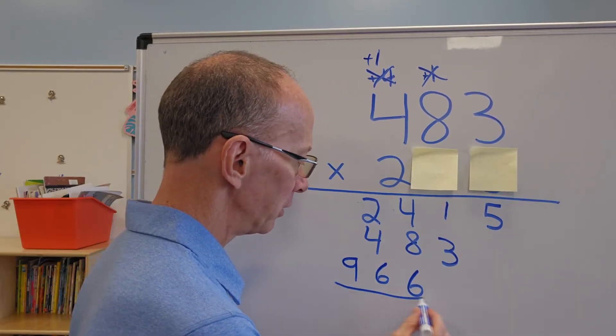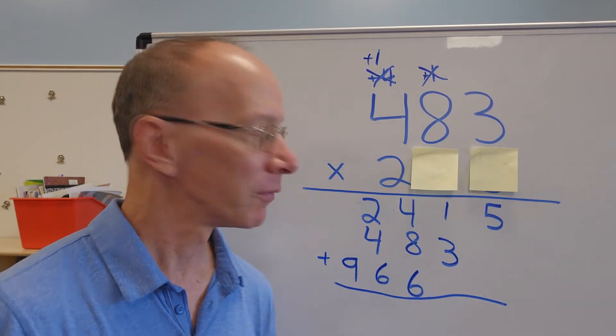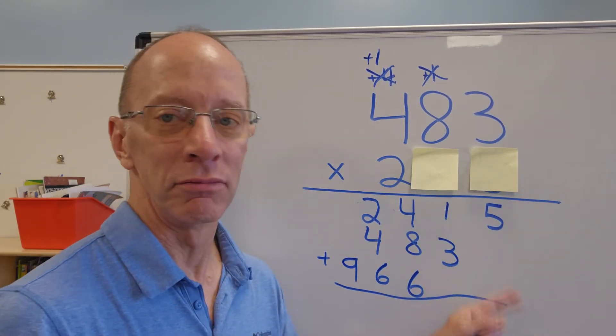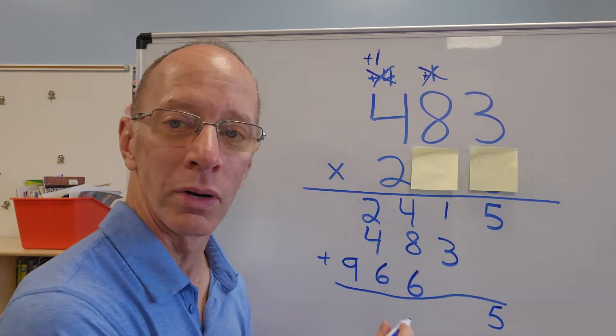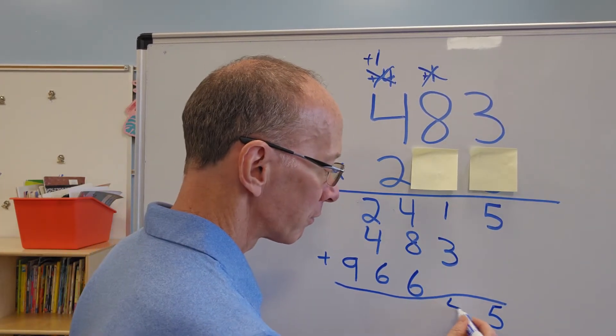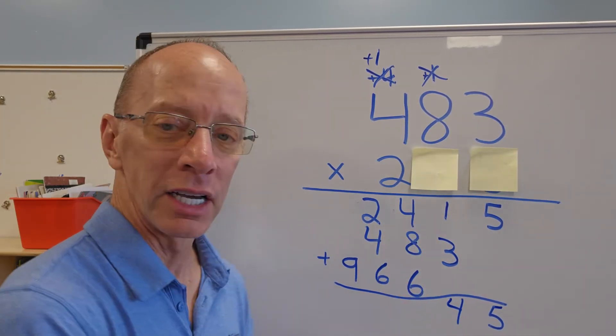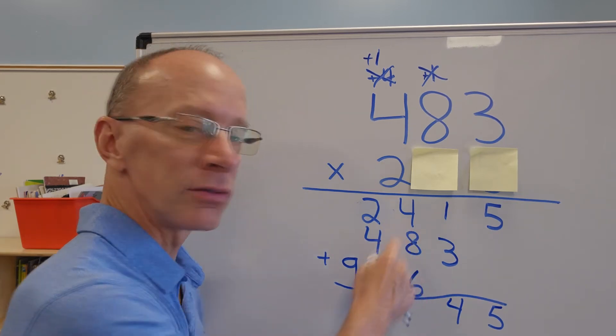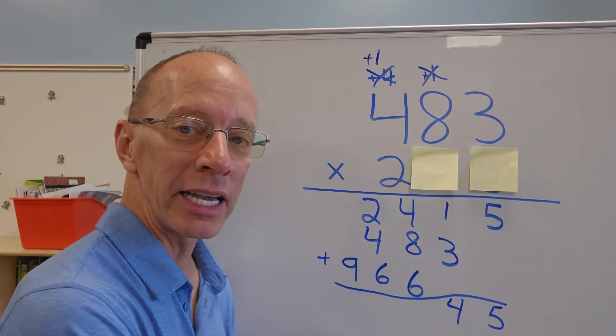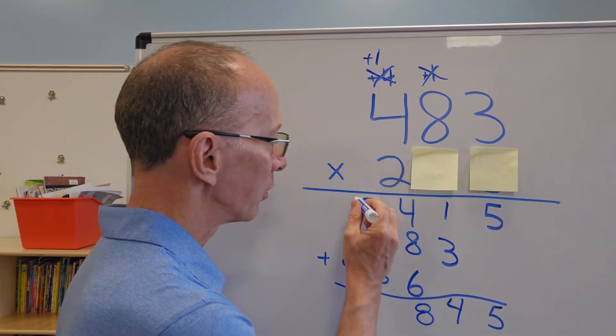And now what I'm going to do is I'm going to add all these numbers right here. So now five plus nothing, nothing is five. Three plus one is four. Eight plus four plus six. You can arrange these numbers to make it a little bit easier for us. So I'm going to just take six and four is 10. And then 10 plus eight, 18. So I put the eight right here, carry the one up there.